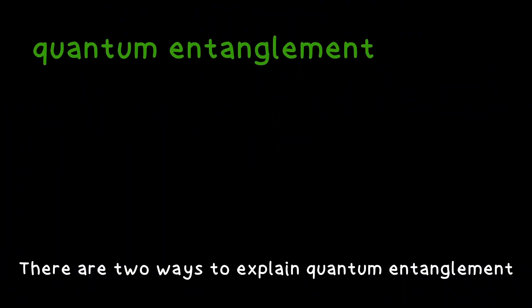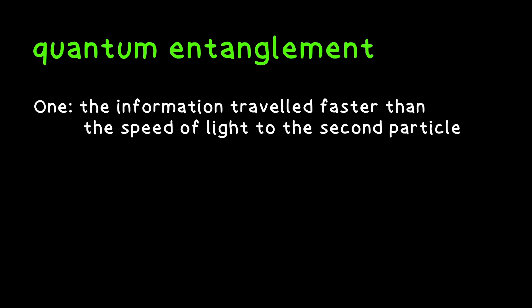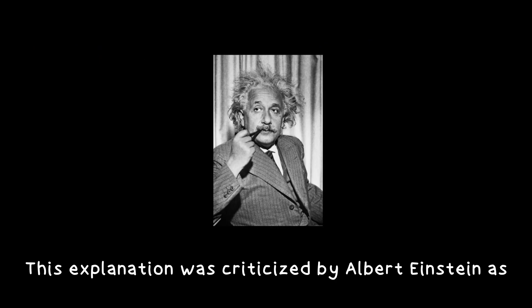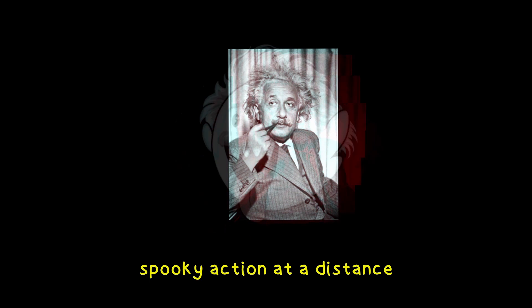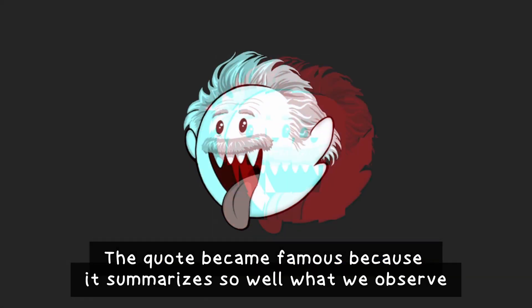There are two ways to explain the observation of quantum entanglement. The first explanation is that the information travelled faster than the speed of light to the second particle. This explanation was criticized by Albert Einstein as spooky action at a distance. The quote became famous because it summarizes so well what we observe. But let's continue to the second explanation of quantum entanglement.